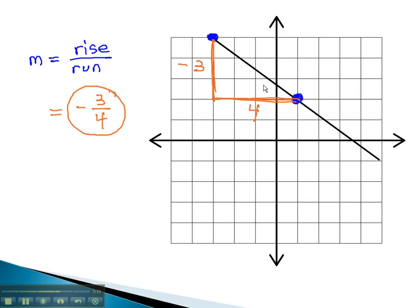Notice, when the graph went downhill from left to right, the slope, or rate of change, was negative.